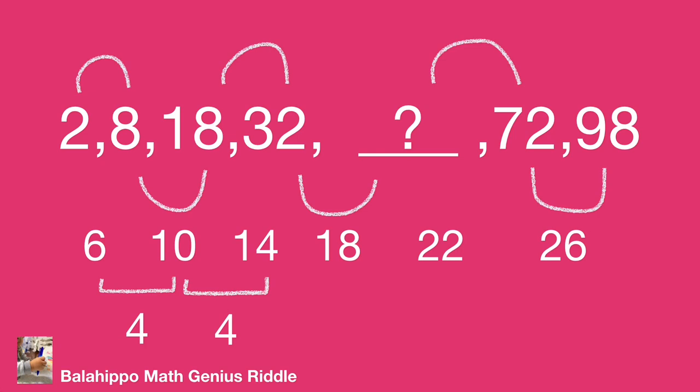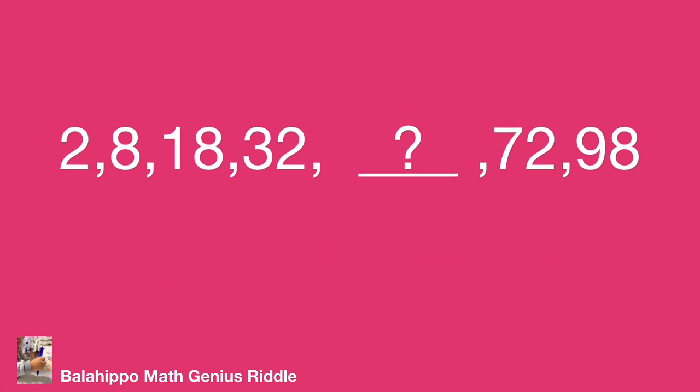Now we've found the rule for the number series. We can get the value for the missing number. It is 32 plus 18 equals 50. That's the result. Okay, can we find another rule?